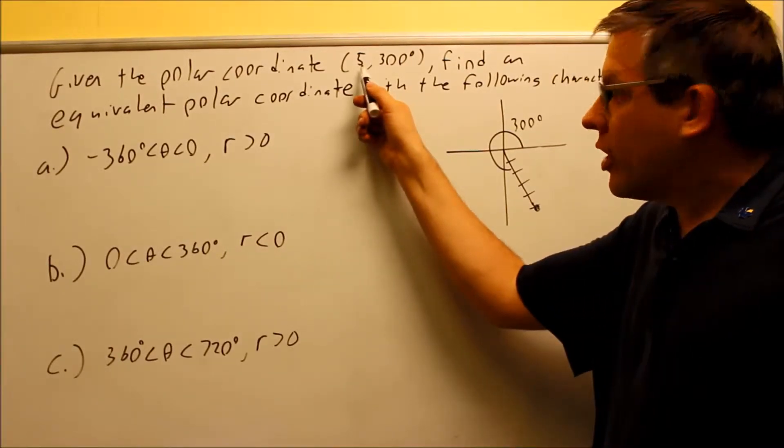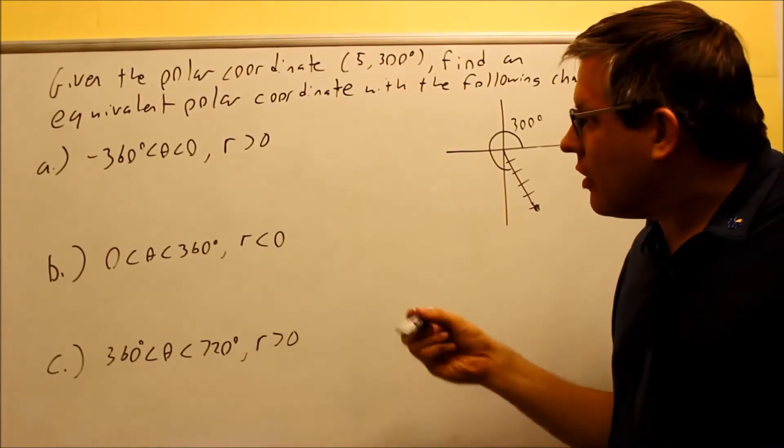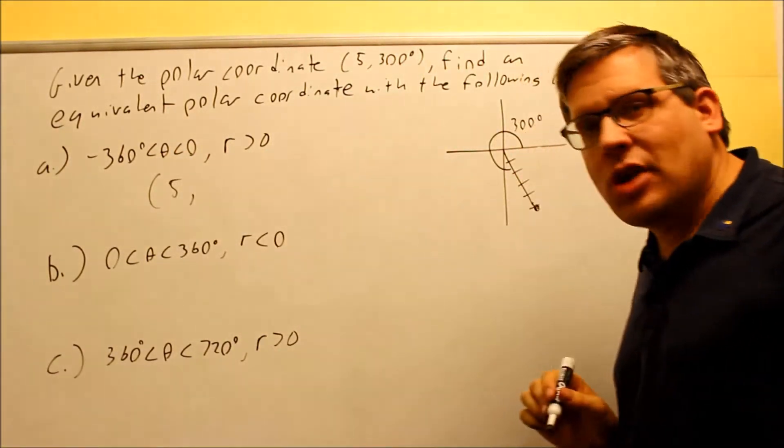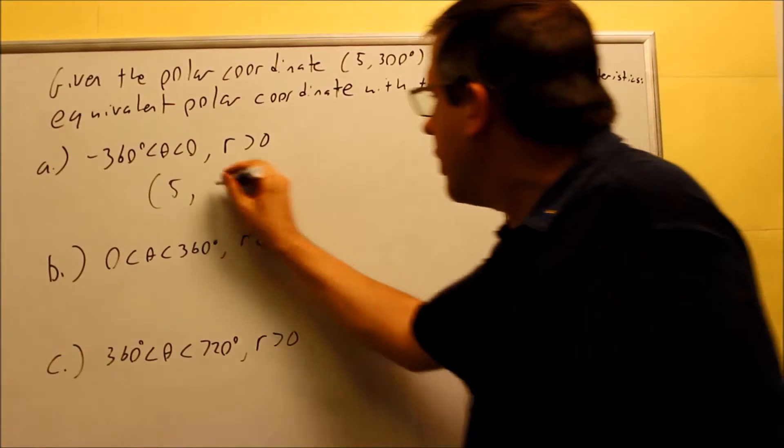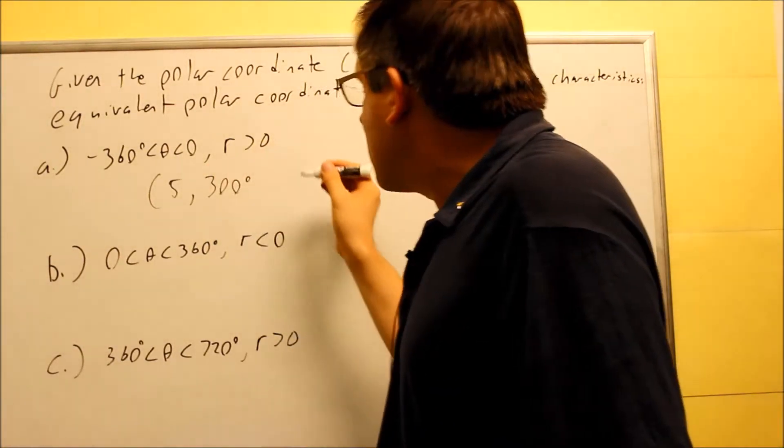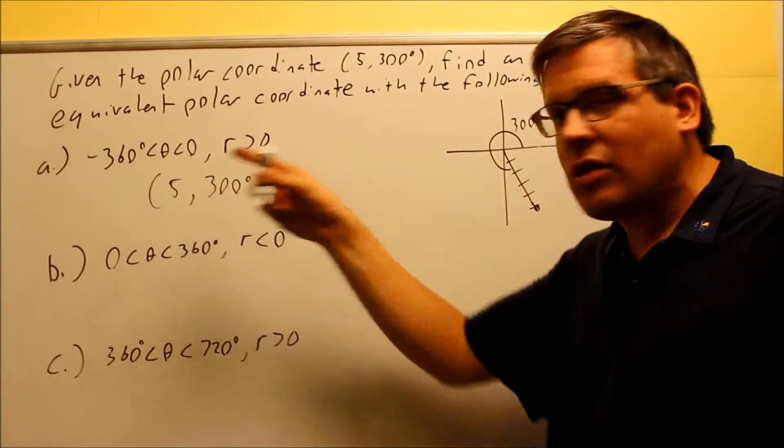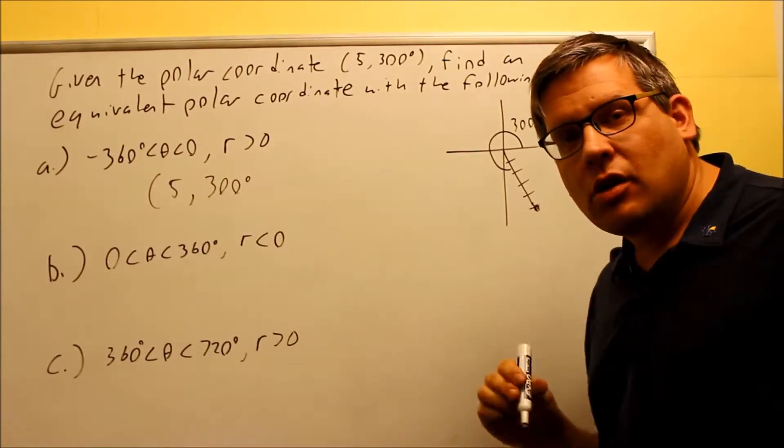This one is already positive. I don't want to change the sign of the r, so therefore, I'm going to do 5, I'm going to keep that the same. And then, for the 300, I can choose to either add or subtract 360. So again, I'm not changing the sign of the r, that's why I'm using 360 and not 180.